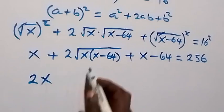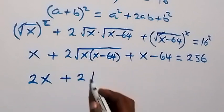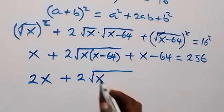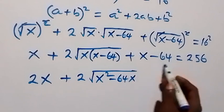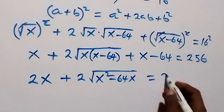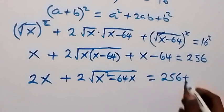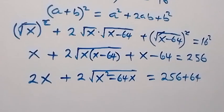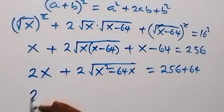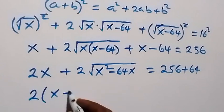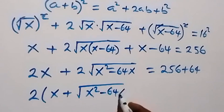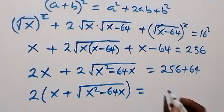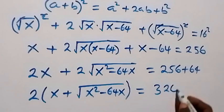Then we have plus 2√(x² − 64x). We expand under the root to get x² − 64x. Then we move −64 to the right side, giving 256 + 64. We factor out 2: 2(x + √(x² − 64x)) equals 256 + 64, which is 320.